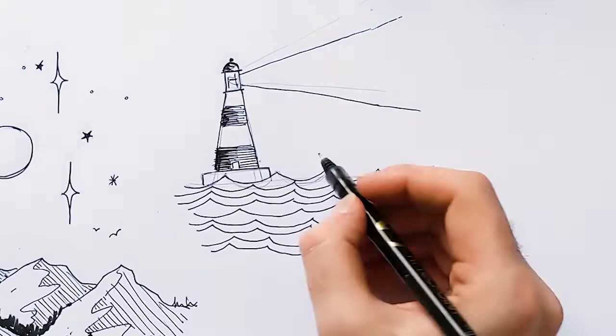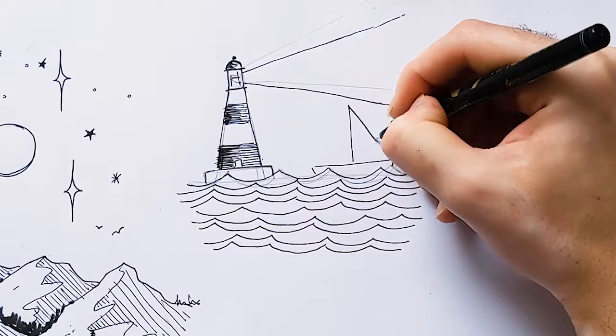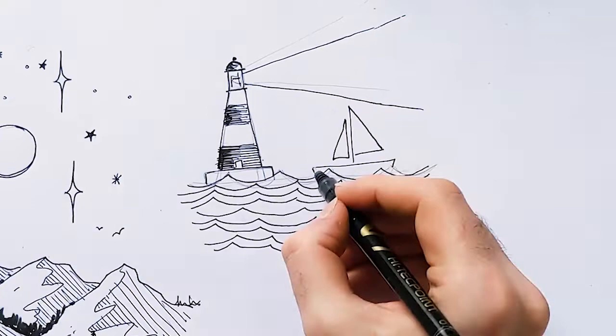And once again, you can add whatever details you want. Maybe it's not a lighthouse, but you want to add in a little boat that's sailing on the waves. Again, using simple shapes like these triangles here, you can make a boat that goes on the water. And let's colour that one in too.